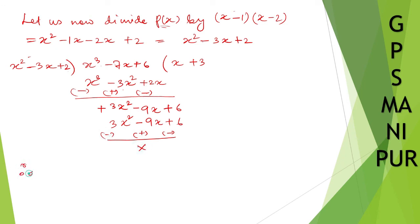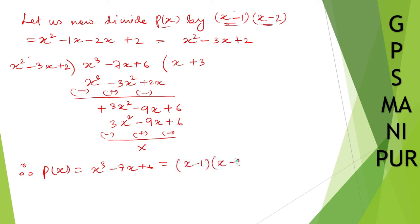Therefore, p of x is equal to x cubed minus 7x plus 6, which equals x minus 1 into x minus 2 into x plus 3. That's all. Thank you so much, we will meet in the next video.